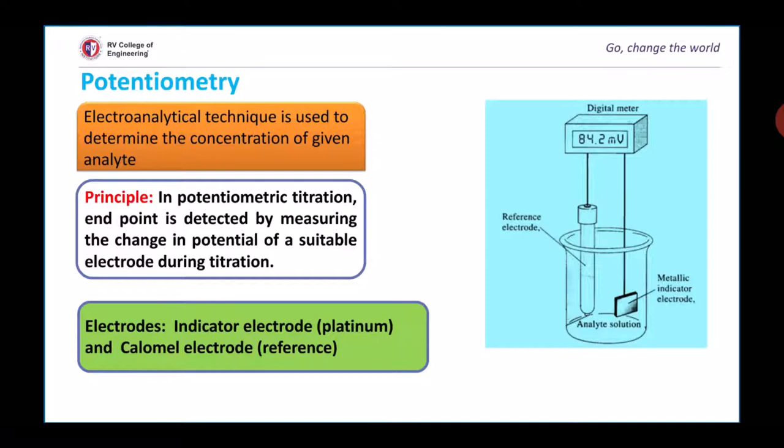The potential of a reference electrode remains constant. Calomel electrode is one such reference electrode which is extensively used in potentiometry.